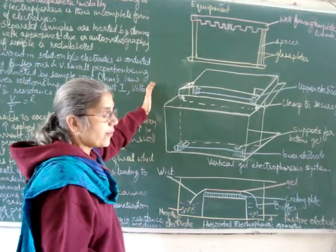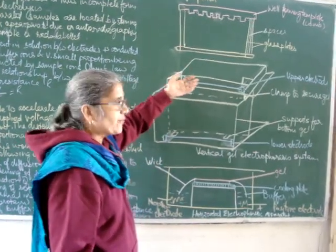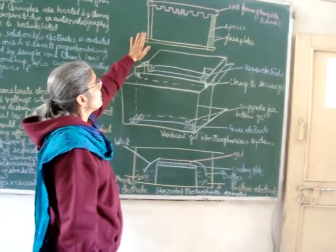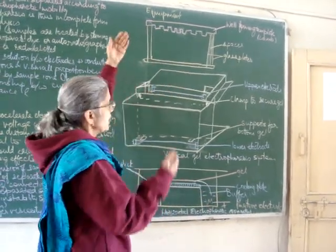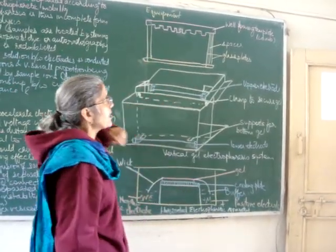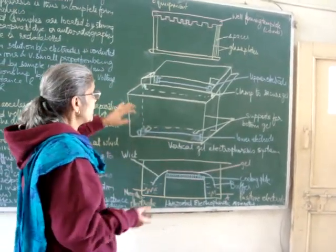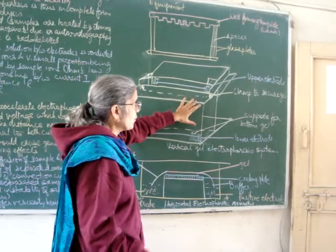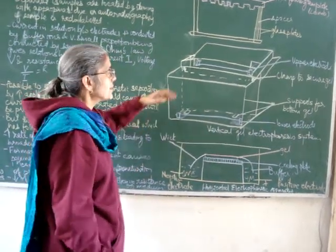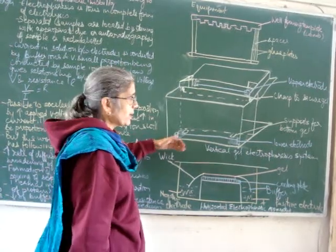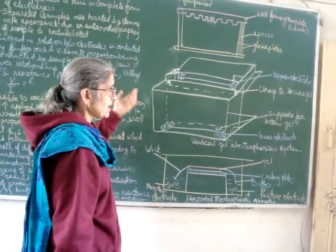In the vertical gel electrophoretic unit, the apparatus consists of two buffer chambers: the upper cathode buffer chamber and the lower anode buffer chamber. Between two glass plates, the gel is cast using spacers. A comb is attached so that wells can be formed. Once the gel has solidified, the comb is removed and the glass plates with the gel are clamped into the electrophoretic apparatus. The sample is loaded into the wells. The upper electrode is the cathode (negatively charged) and the lower electrode is the anode. Buffer is filled in both chambers and electrophoresis is carried out. Proteins are typically separated by this method.